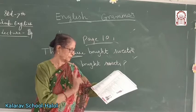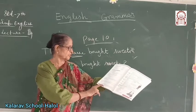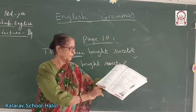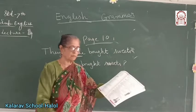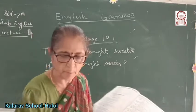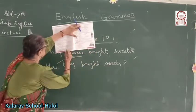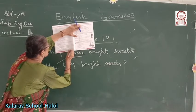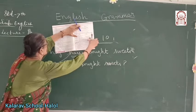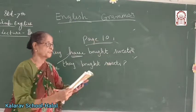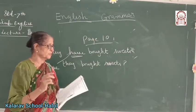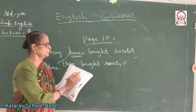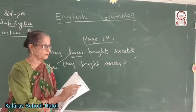WH questions begin with question words such as: what, why, when, where, whom, whose, or which. Underline these, children — this is very important. WH questions begin with interrogative pronouns like who, whom, whose, and are also used to ask questions. These are used only for persons.